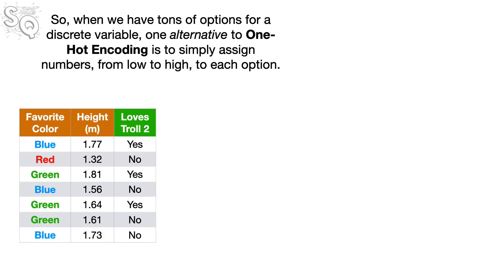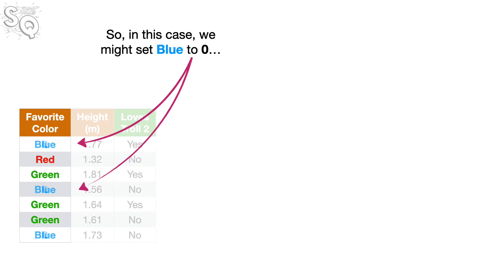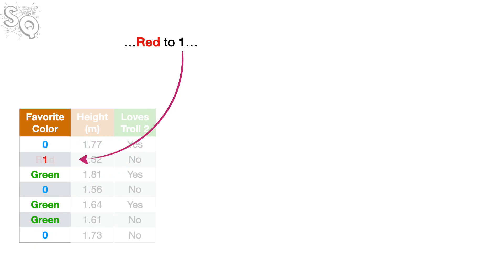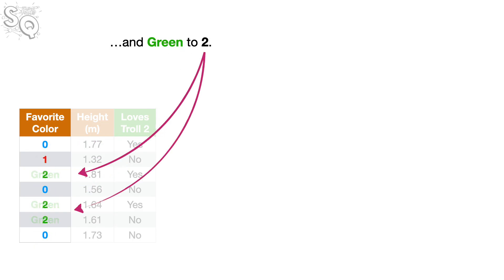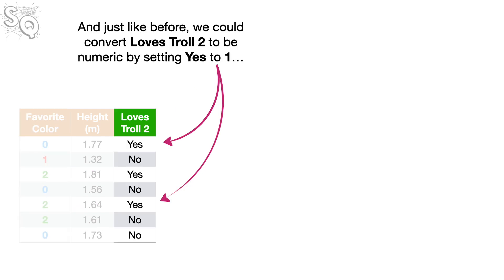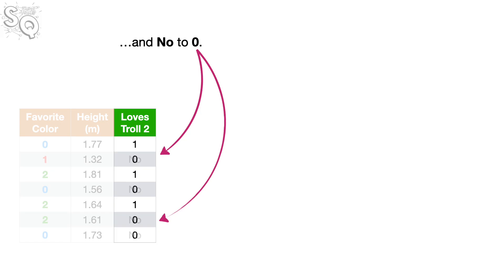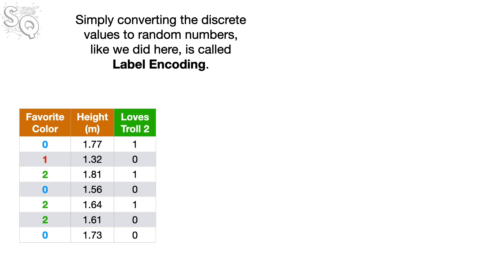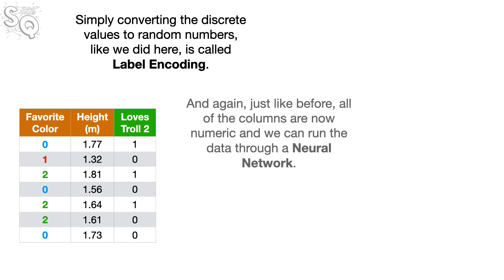So when we have tons of options for a discrete variable, one alternative to one-hot encoding is to simply assign numbers, from low to high, to each option. So in this case, we might set Blue to 0, Red to 1, and Green to 2. And just like before, we could convert Love's Troll 2 to be numeric by setting Yes to 1 and No to 0. Simply converting the discrete values to random numbers like what we did here is called Label Encoding. And again, just like before, all of the columns are now numeric and we can run the data through a neural network.